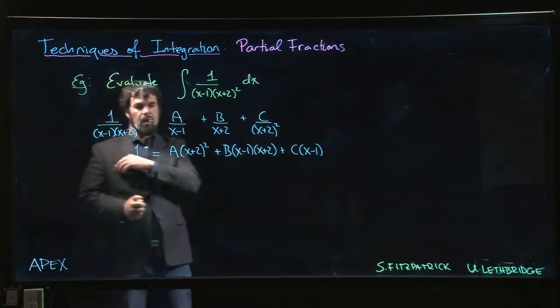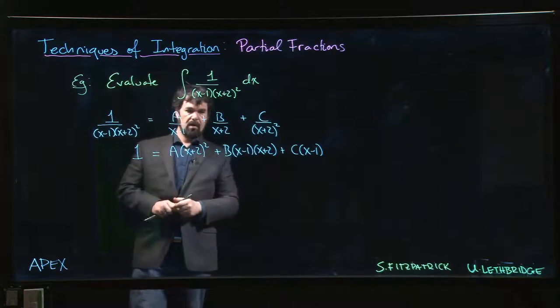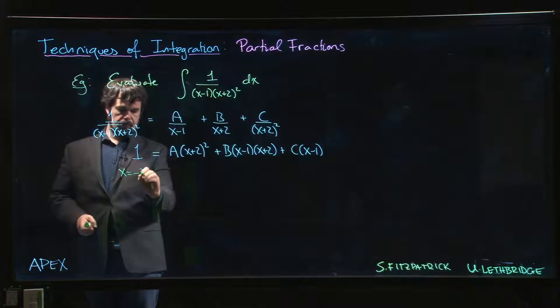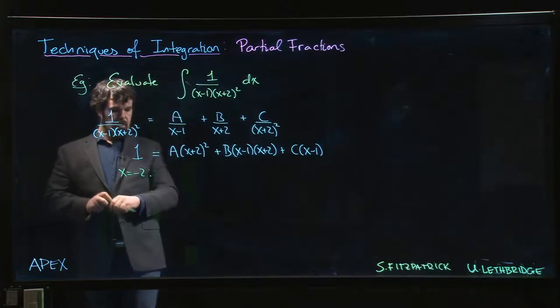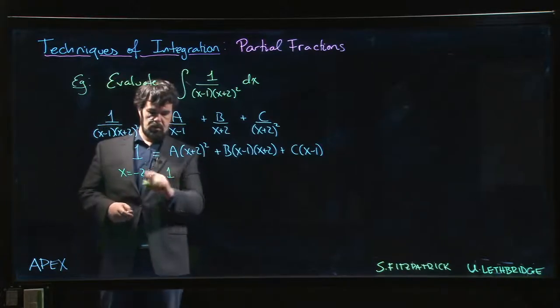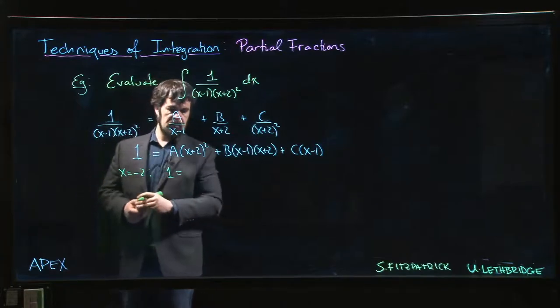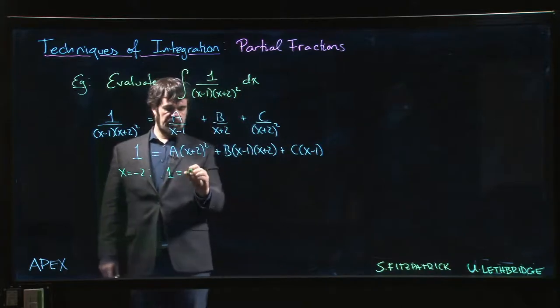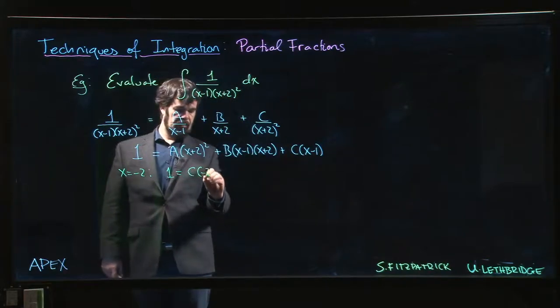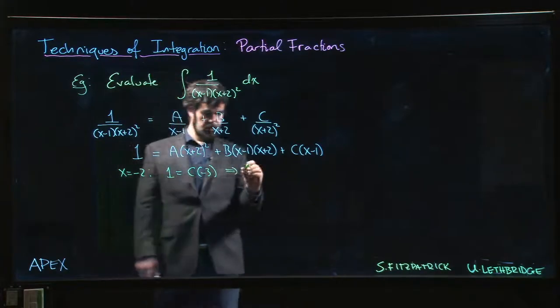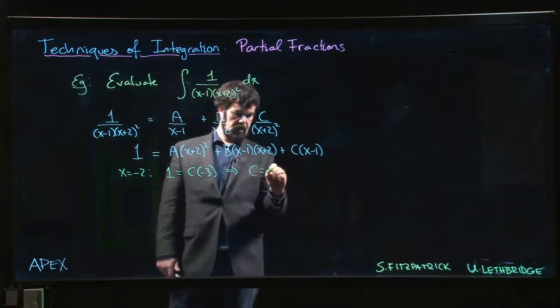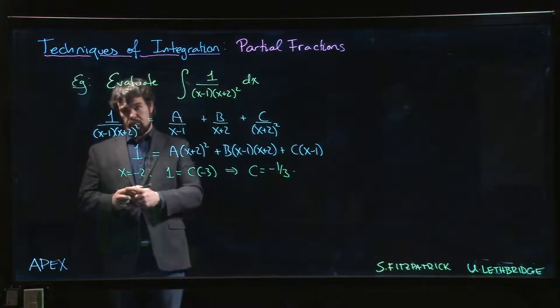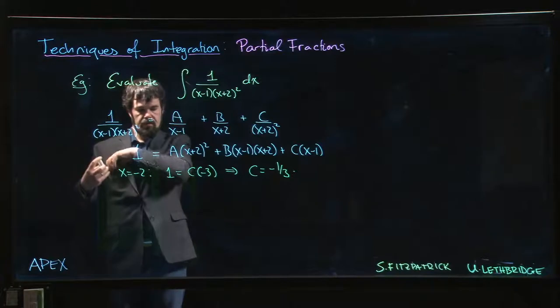Now we can try different values. So if we try x equal to minus 2, well this side remains as 1. 1 is equal to, so this will be 0, this will be 0, we simply get C times minus 3. And that means that C is minus 1/3. Not so bad, we've got 1 out of 3.